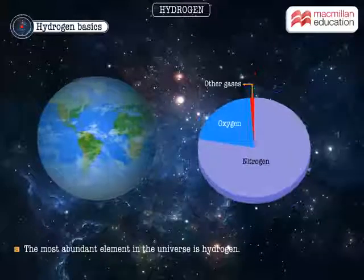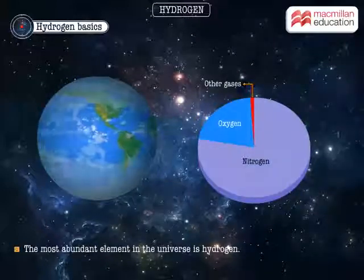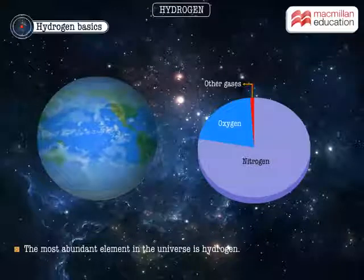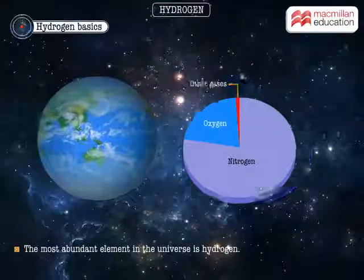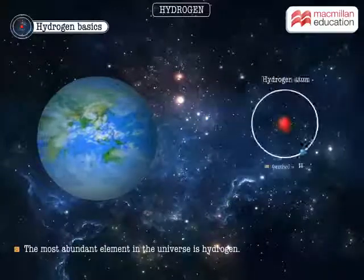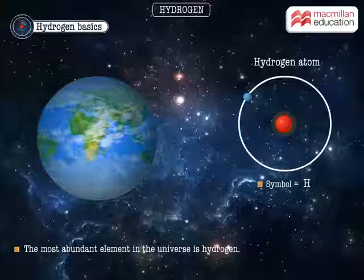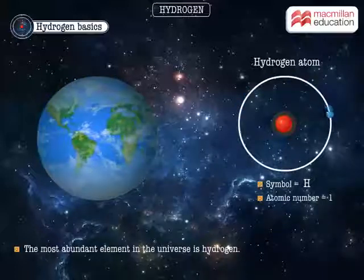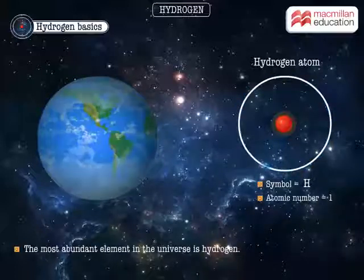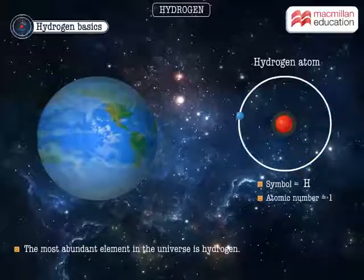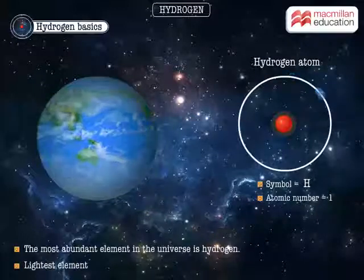In the Earth's atmosphere, however, hydrogen gas is extremely rare. Hydrogen, with just one electron and one proton, is the simplest element. It is the lightest element too.